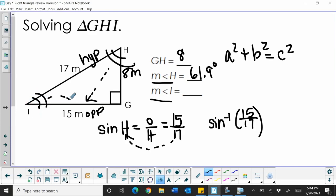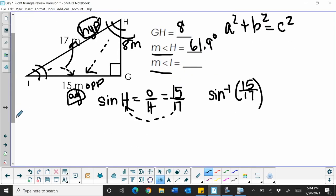So from angle I, the given side is my adjacent, and the 17 is still my hypotenuse. So adjacent and hypotenuse, that's my cosine function. So the cosine of angle I is equal to my adjacent over the hypotenuse, which is the two sides are 15 over 17. So I'm using the same ratio, but a different trig function.